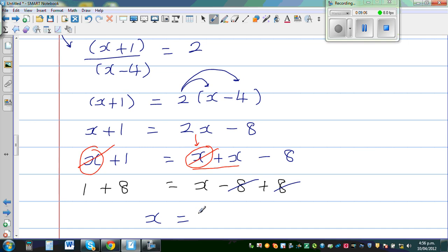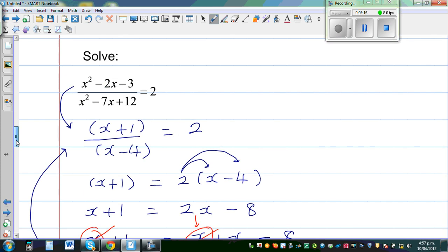So x equals 9. Does this answer make sense? Let us put this answer back into this equation. If you put here, this is 9 plus 1 over 9 minus 4, which is 10 over 5, which equals 2. That's what they gave.